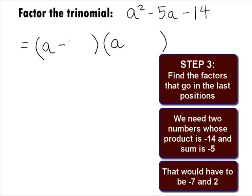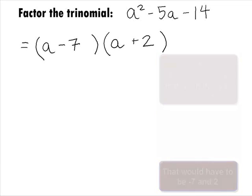Those magic numbers are negative 7 and 2. Putting us into the last positions of our binomial factors, we get our final answer of a minus 7 times a plus 2.